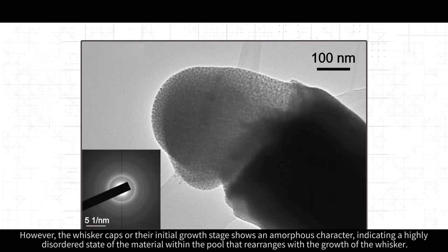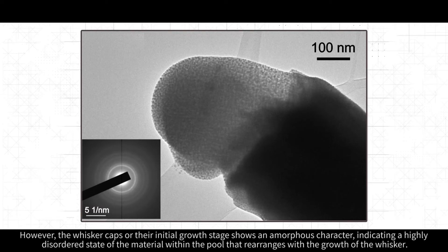However, the whisker caps or their initial growth stage show an amorphous character, indicating a highly disordered state of the material within the pool that rearranges with the growth of the whisker.